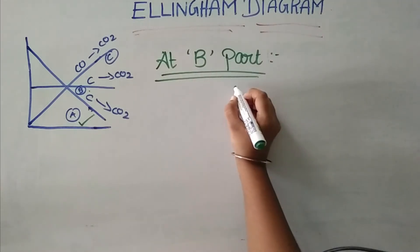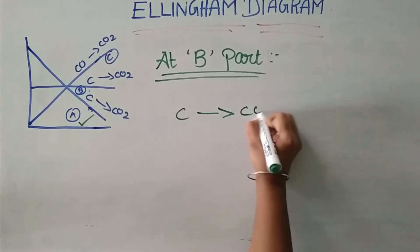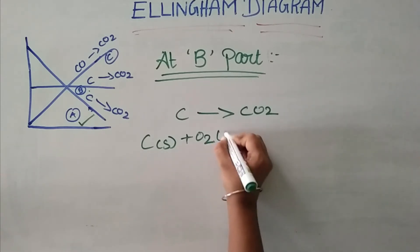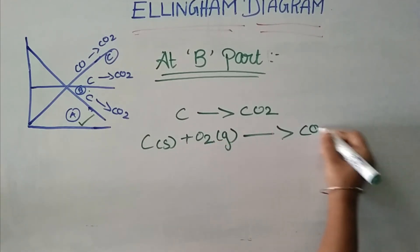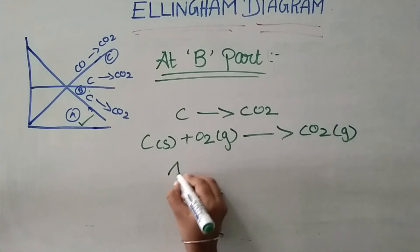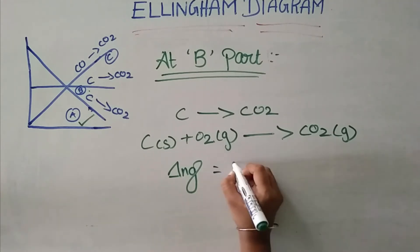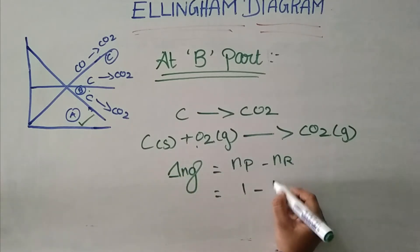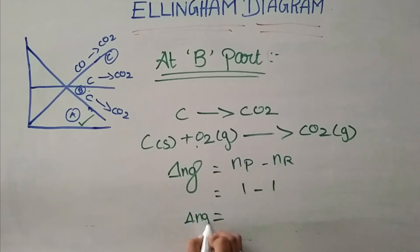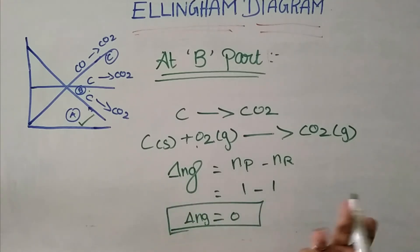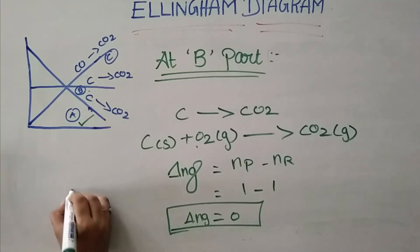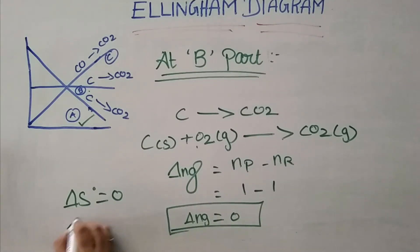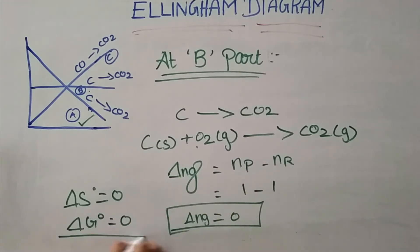At part B: carbon (solid) reacts with oxygen (gaseous) to produce carbon dioxide (gaseous). δN_g = NP − NR = 1 − 1 = 0. Since δN_g is 0, δS is also 0. Therefore δG⁰ is also 0, meaning the reaction is at equilibrium.